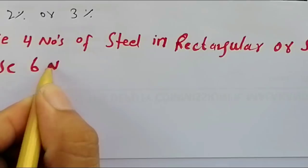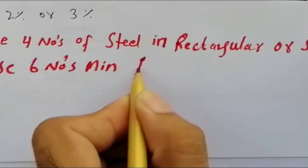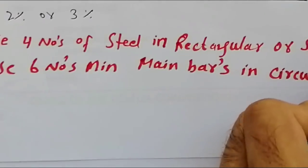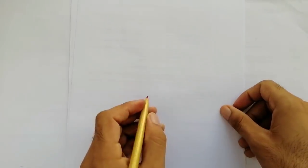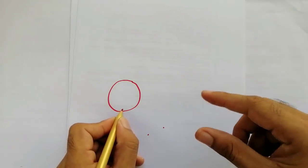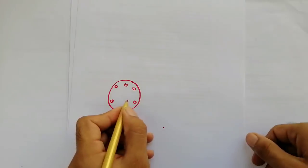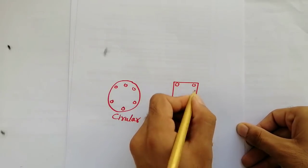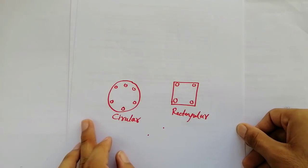Use six numbers minimum. Use six number of steel minimum, six numbers of steel. And this is rectangular. So use minimum four numbers of longitudinal or main bars. These are too much important which I have discussed in front of you.